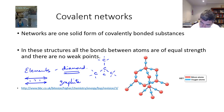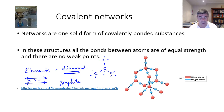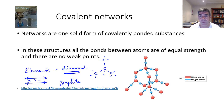There is actually a little bit of movement that can occur of electrons between these sheets of carbon. As a result, graphite actually is a conductor of electricity, which is an unusual property for a covalent network.